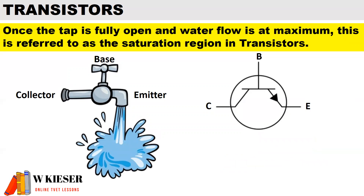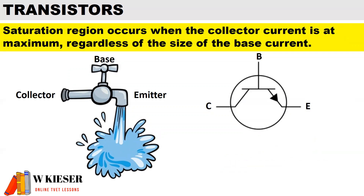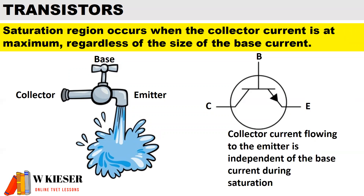Once the tap is fully open and water flow is at maximum, this is referred to as the saturation region. The saturation region occurs when the collector current is at maximum, regardless of the size of the base current. In other words, for the saturation region, collector current flowing to the emitter is independent of the base current during saturation.